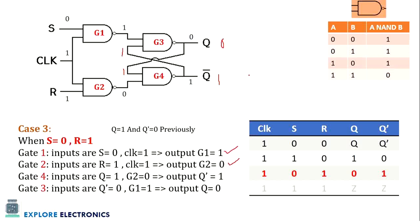So in this case, the output will be Q=0 and Q bar=1. When R is equal to 1, the output of the flip-flop resets to 0. So R=1 means the output is reset to 0.